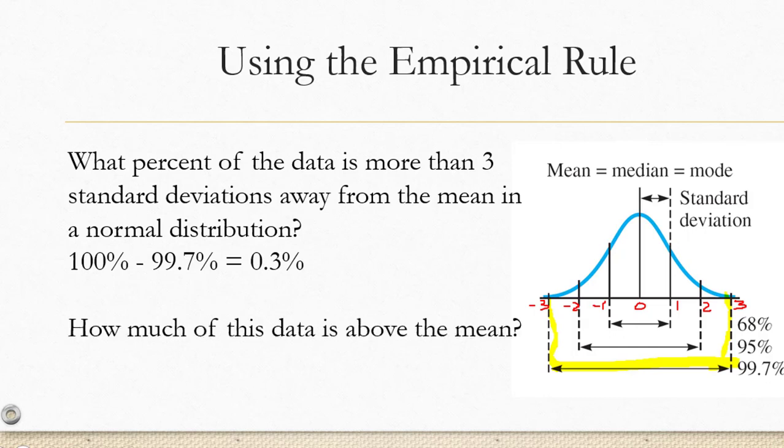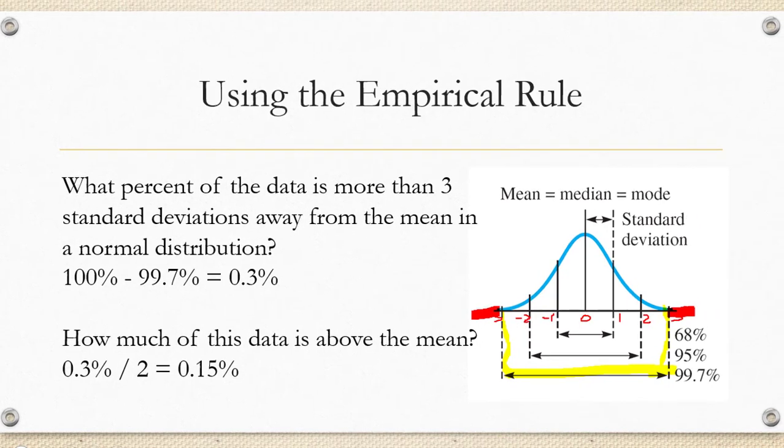How much of this data, the 0.3%, is above the mean? Well, half of that 0.3% is below the mean and half of that 0.3% is above the mean. So 0.3% divided by 2 or 0.15% of the data is above the mean.